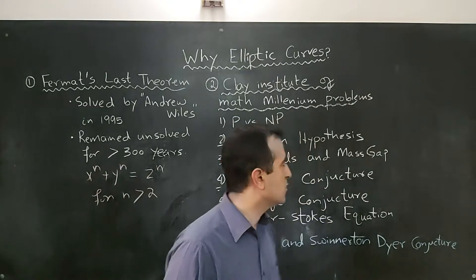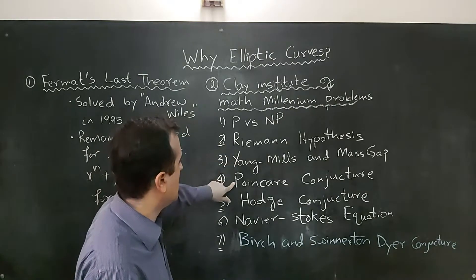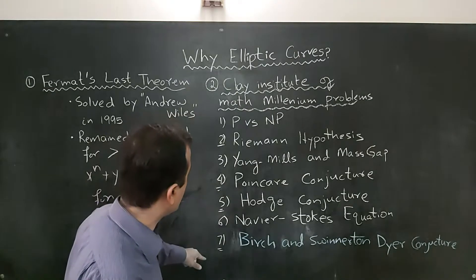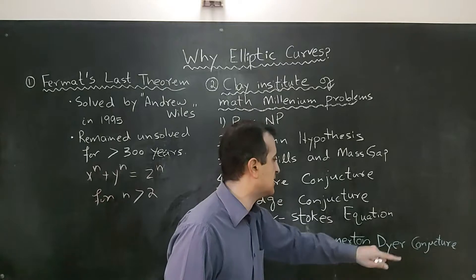These problems include P versus NP, Riemann hypothesis, Yang-Mills mass gap problem, Poincaré conjecture which is already solved by a Russian mathematician, and one of these problems is the Birch and Swinnerton-Dyer conjecture.